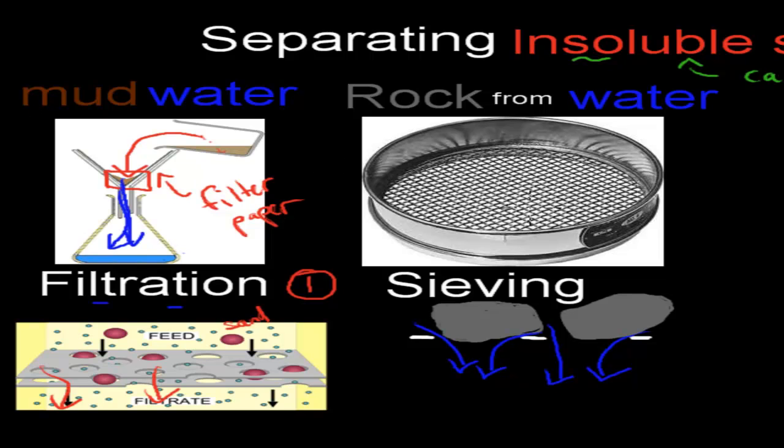Another way that we can separate an insoluble solid, something that does not dissolve in water, from water would be by using a sieve. For example, if we have rocks and we have lots of rocks in water, what we could do is we could use that sieve.